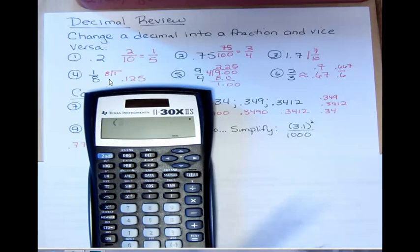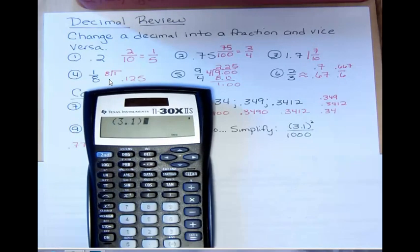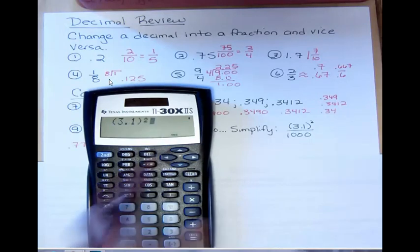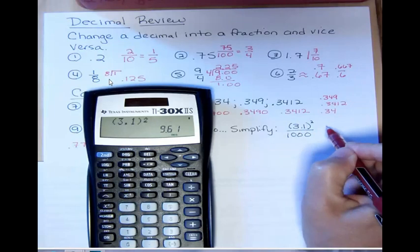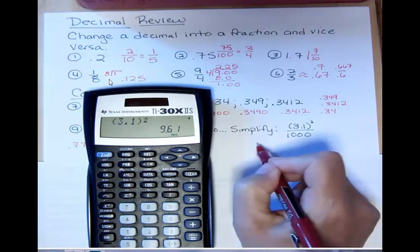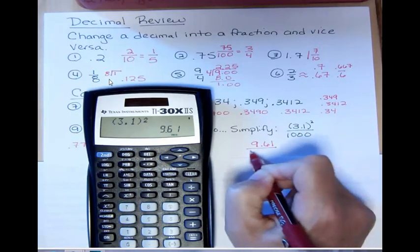And then I'm going to do X to the second power right here, this button right here, X squared, and then just hit enter. And what that gives me is 9.61. Now I'm dividing by 1,000.